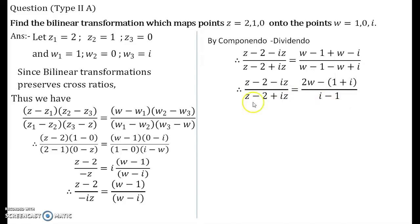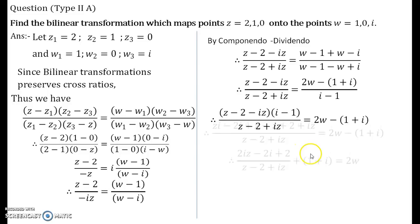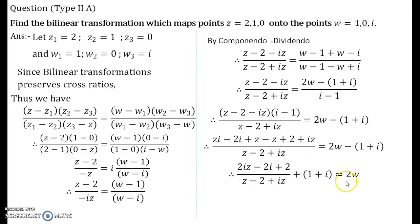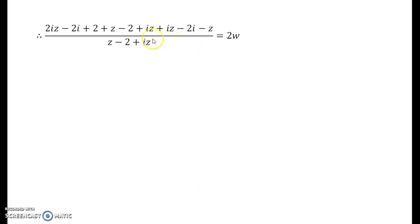Now on further solving, I solve this entire expression. Now what do I need is the bilinear transformation is of the form w equals to something. So in order to have all the terms away from w, that is I want w alone on one side, that is what I am going to solve for. So I am shifting the denominator on the other side, multiplying and performing all the algebraic calculations over here. And then these expressions and all the things get cut down, and at the end I get 2w = (4iz - 4i)/(z - 2 + iz). And finally I get w equals to this.